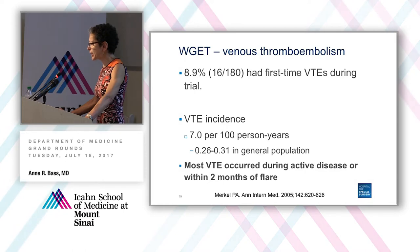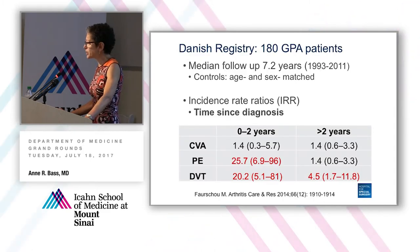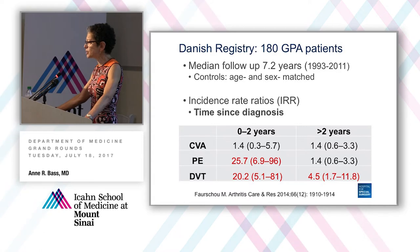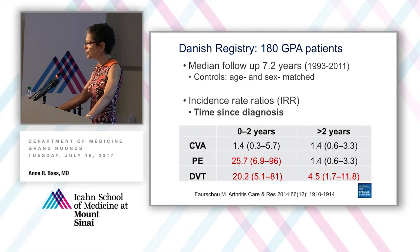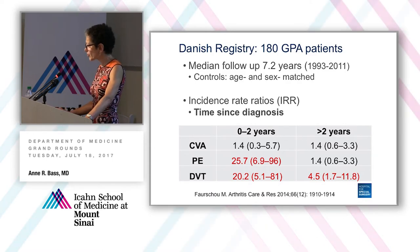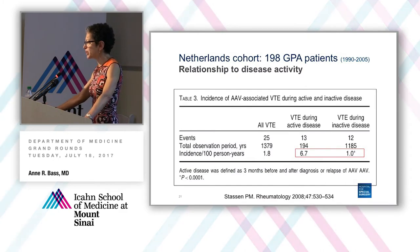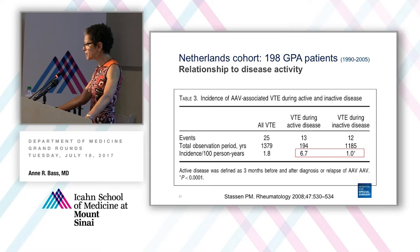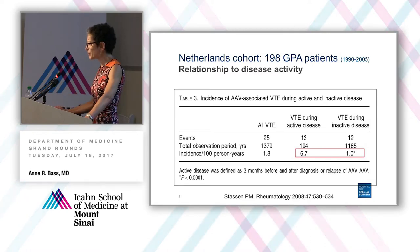This has since been demonstrated in other cohorts. A Danish registry of almost 200 GPA patients followed for a median of 7 years showed that within the first two years, the rate of PE and DVT was 20 to 25 times greater than age- and sex-matched controls, but not so for arterial thrombosis, and that rate diminished over time. A similar Dutch study showed a seven-fold greater rate of VTE when disease was active compared to quiescent disease.